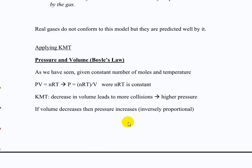Let's talk about some of these laws and how this works. Boyle's law says pressure and volume are inversely proportional — you increase pressure, you decrease volume. Kinetic molecular theory says: if you decrease the volume, you'll have more collisions because the same number of particles are now in a smaller space. More collisions means more pressure, since we define pressure as collisions of the gas. That explains the theory behind this law.